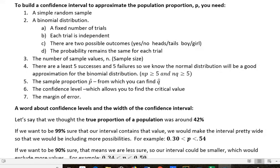First, you need to know that it's a simple random sample. Number two, you need a binomial distribution. And just to remind you what you need for that: a fixed number of trials, each trial is independent, there are two possible outcomes like yes-no, heads-tails, boy-girl, and the probability remains the same for each trial.